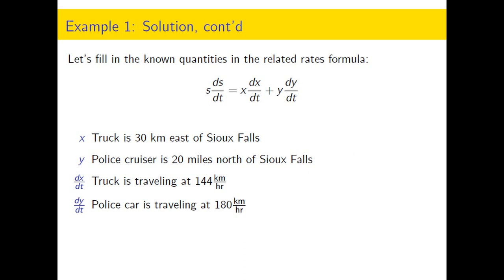That's why we were taking this implicit derivative with respect to T, because then we'd get an expression that had not only the distance that the truck was from Sioux Falls, we also have the rate at which that distance is changing. And similarly for the truck.